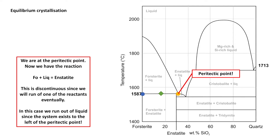This is a discontinuous reaction, since we'll eventually run out of one of the reactants — either forsterite or liquid. In this case, we run out of liquid first, since the system exists to the left of the peritectic point. An easy way to visualize this: if we extend the enstatite line all the way up, a system to the left runs out of liquid first, while a system to the right runs out of forsterite first. So at this particular point, because liquid is consumed first, our final solidified products will be forsterite plus enstatite.